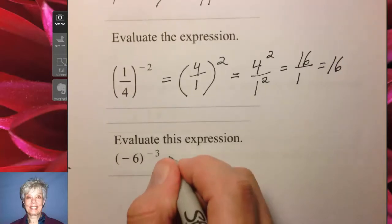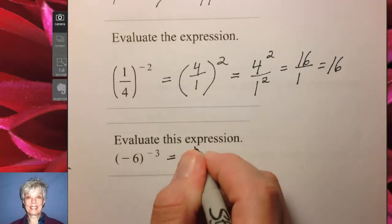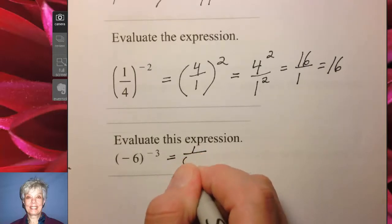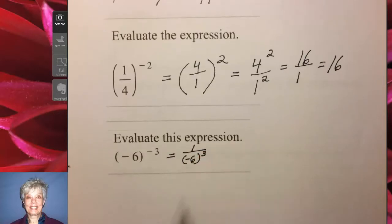This is what we're going to do. This is 1 over parentheses negative 6 to the positive 3 power.